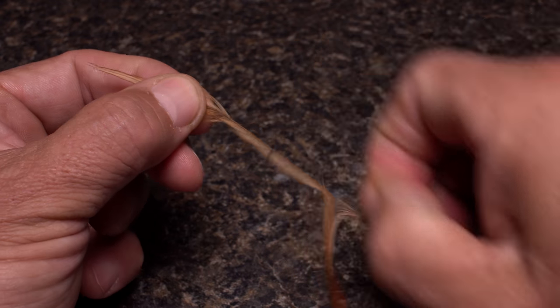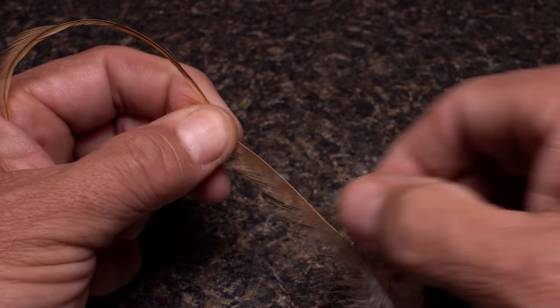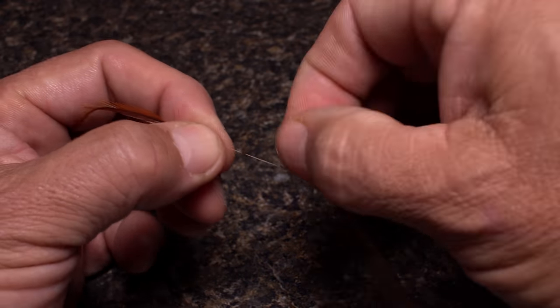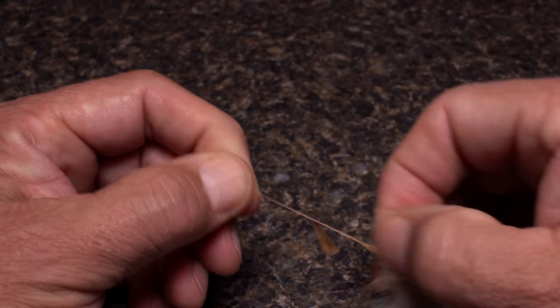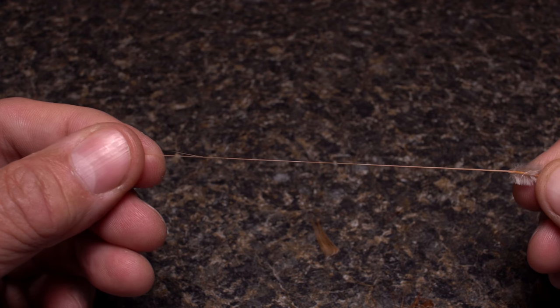To strip them, simply pull down on the fibers as you work your way to the butt end of the feather. Do this on both sides of the stem using the feather's unstripped hip and butt as handles. Both of these should then be snipped off.